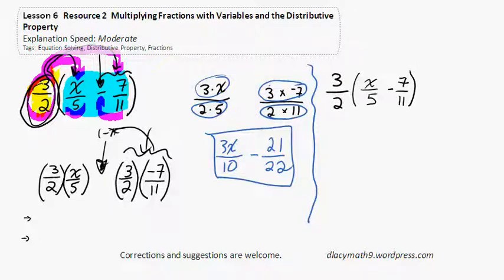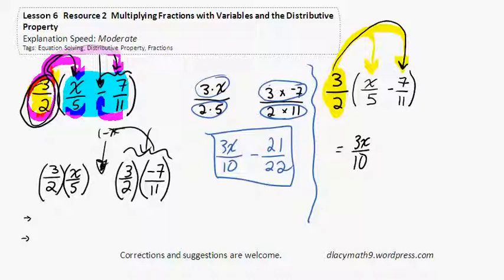Here we go. I've written the problem out. Now, I have a colleague that likes to call this bombing. The distributive principle bombs 3 halves into both of these. Here I go once again. 3 halves times x over 5 is 3x over 10. Now I will go in and do the second part. 3 halves times negative 7 elevenths is negative 21 over 22. Done.